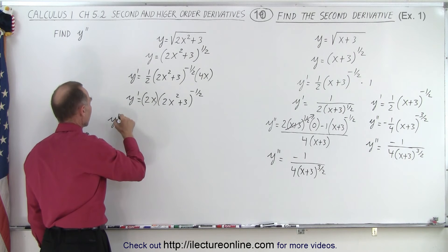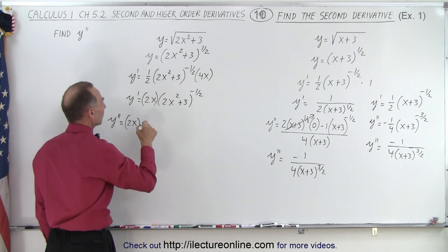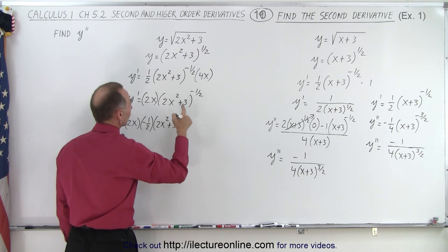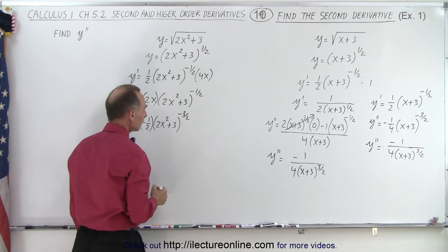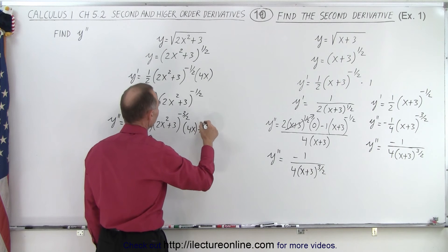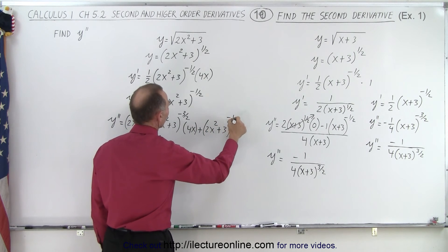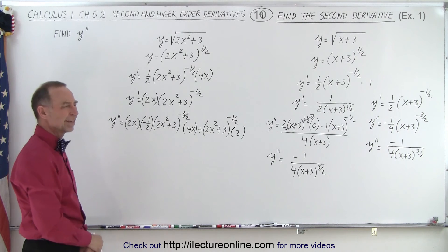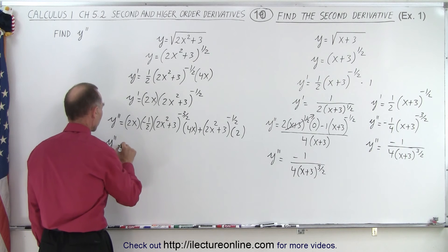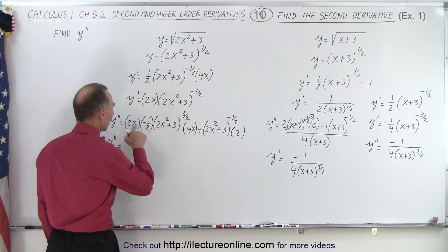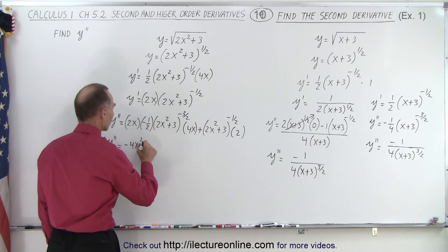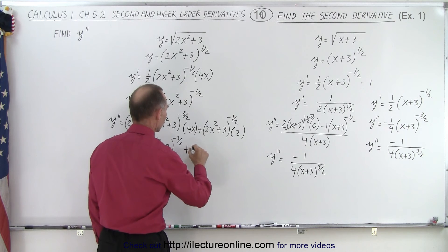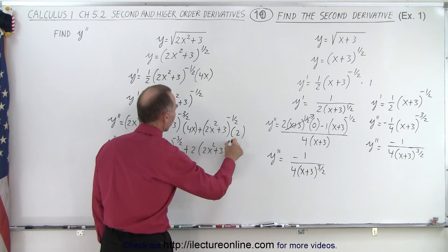I can bring this to the bottom and use the quotient rule, or leave it in the numerator and use the product rule. Product rule is typically easier, so I'll use the product rule with 2x and 2x squared plus 3 to the minus 1 half. So y double prime equals the first times the derivative of the second — that's minus 1 half times 2x squared plus 3 to minus 3 halves, times the derivative of what's inside, which is 4x — plus the second, 2x squared plus 3 to the minus 1 half, times the derivative of the first, which is 2. Simplifying: the 1 half and 2 cancel, leaving minus 4x squared times 2x squared plus 3 to the minus 3 halves, plus 2 times 2x squared plus 3 to the minus 1 half.